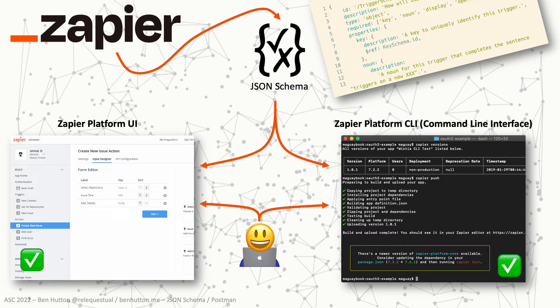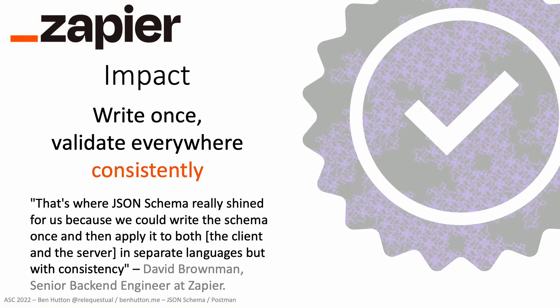Zapier defines the JSON Schema and pushes it to both the web-based platform UI and the platform CLI. Developers can now validate the packages they intend to submit as valid, client-side, in the CLI. When the CLI validates successfully, it's going to validate the same on Zapier's servers — happy developers. Today, all integrations are backed by JSON Schema validation. Write once, validate everywhere consistently — a specific example of where the don't-repeat-yourself principle is applied well. Can you imagine if the CLI claimed your integration was valid, only to be rejected by the server?